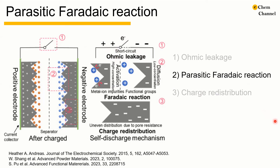Next are the parasitic Faradaic reactions. Parasitic Faradaic reactions involve redox reactions of species in solution or on the electrode surface, which are thermodynamically favorable at the charged state. Electrons are exchanged between the electrode and the redox active species, thereby discharging the electrode. Depending on the rate-limiting steps, they can be divided into activation-controlled and diffusion-controlled processes.